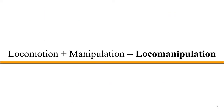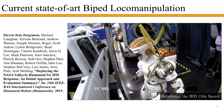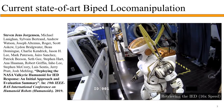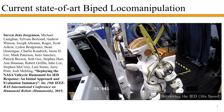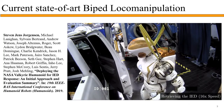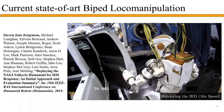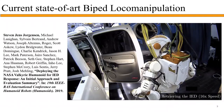Loco-manipulation is essentially performing locomotion and manipulation at the same time. To motivate our work, I want to show a short video of our previous work. This is Valkyrie performing a car door opening task. The robot partially opens the car door, reorients, and pushes the door fully open with the other hand.